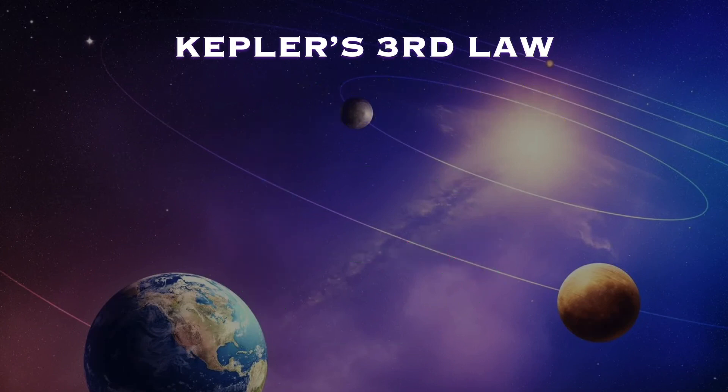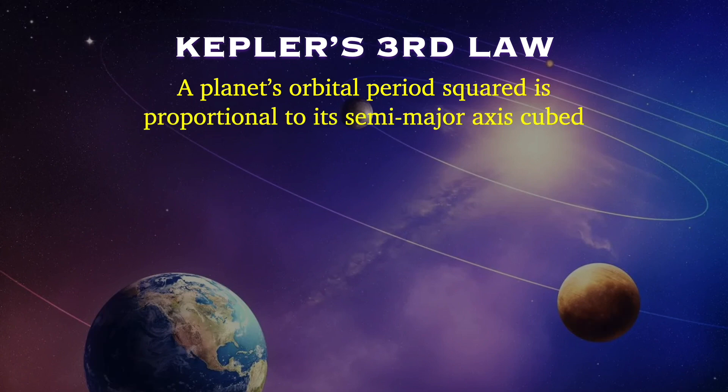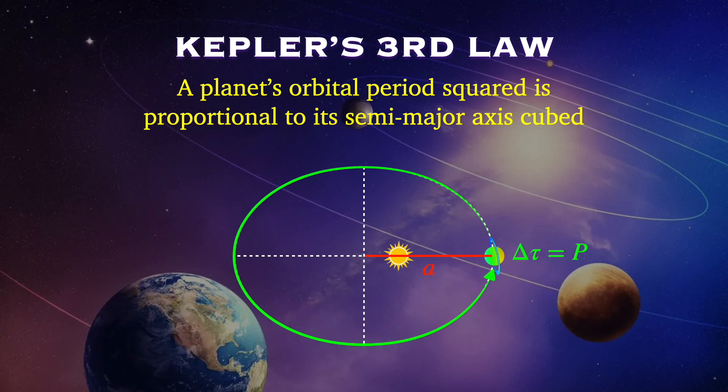And 10 years later, he publishes a third law that states that a planet's orbital period squared is proportional to its semi-major axis cubed. Again, I'm going to clarify what this means. Let's start off by drawing our ellipse with its major and minor axes, and we now place the sun on a focus point. For simplicity, it doesn't actually really matter. Let's say our starting point is at the closest point to the sun. This is called the perihelion. The semi-major axis is half of the major axis, which we're calling A. The period of the orbit is the total time it takes for the planet to make one full revolution.